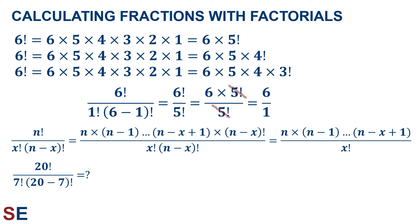6 factorial is equal to 6 times 5 factorial. The 5 factorials cancel, which just leaves us with the 6. If we look at the fraction of factorials for n choose x, we can see that it will always simplify considerably. If we expand out the factorial in the numerator, at some point the entire last part of it will equal the second term in the denominator and those can be cancelled, leaving us with fewer terms in the numerator and only one factorial in the denominator.